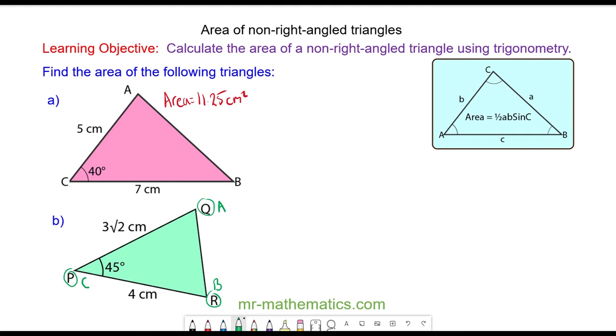So the side opposite angle B is lowercase b, the side opposite angle A is lowercase a, and the side opposite angle C is lowercase c.